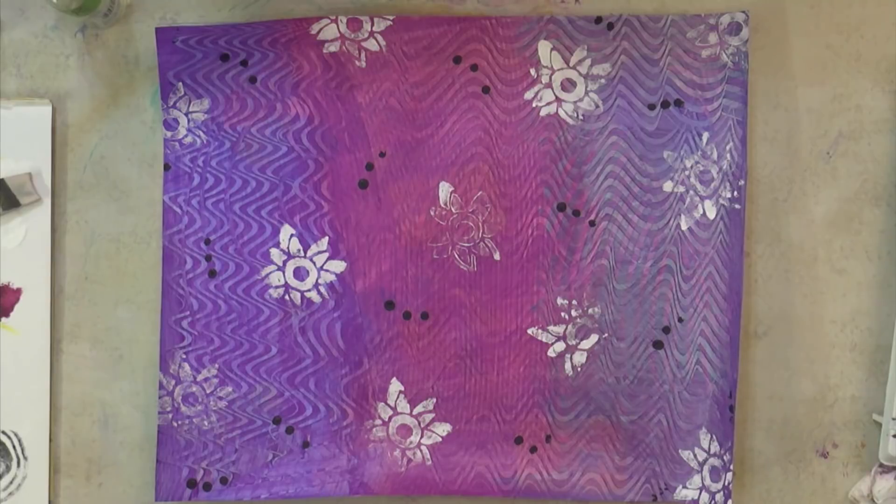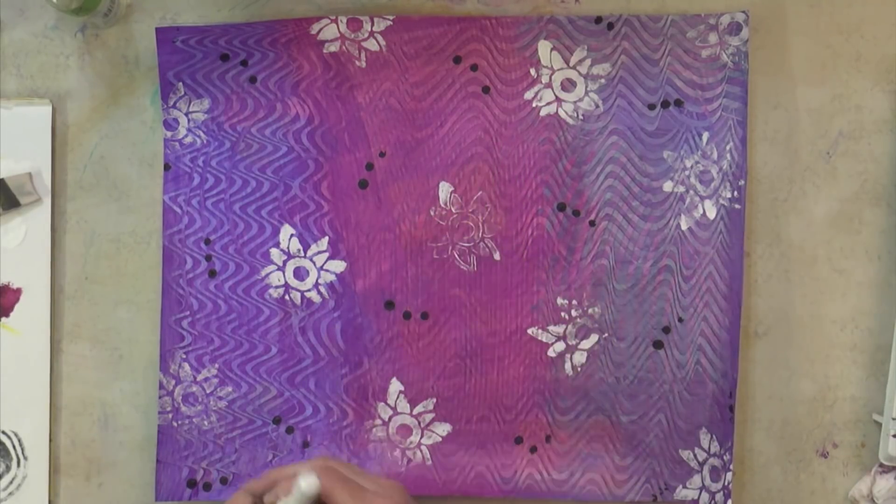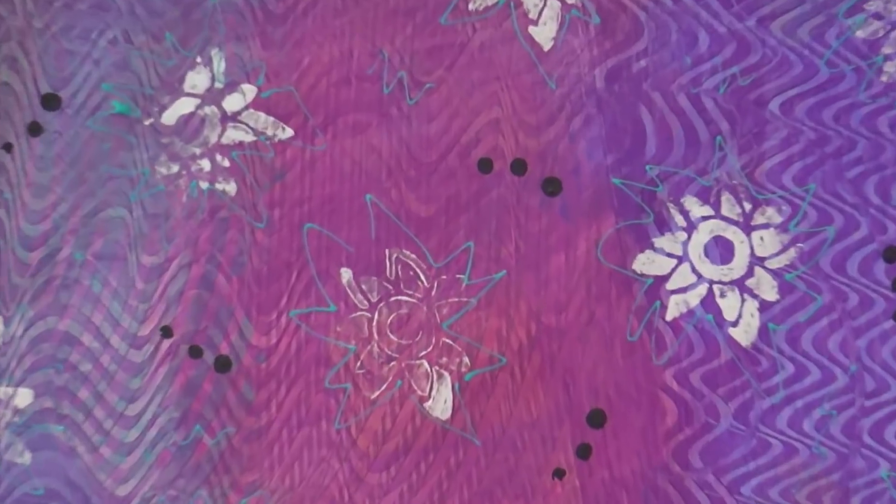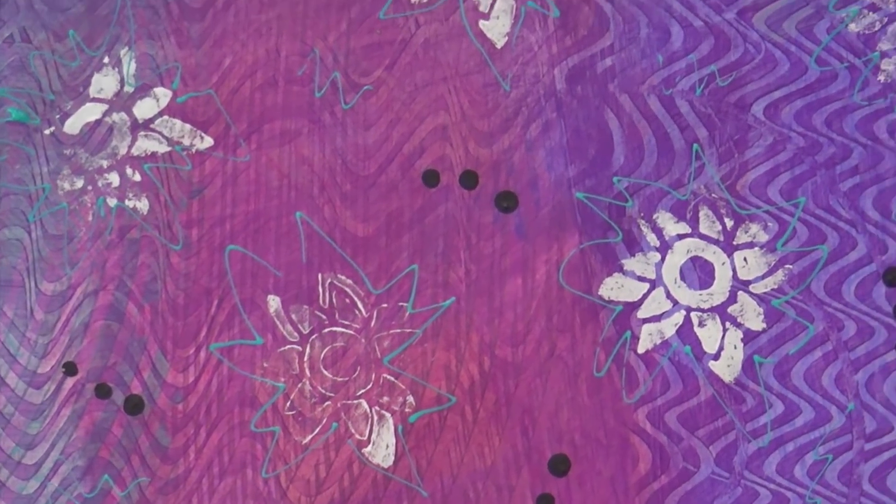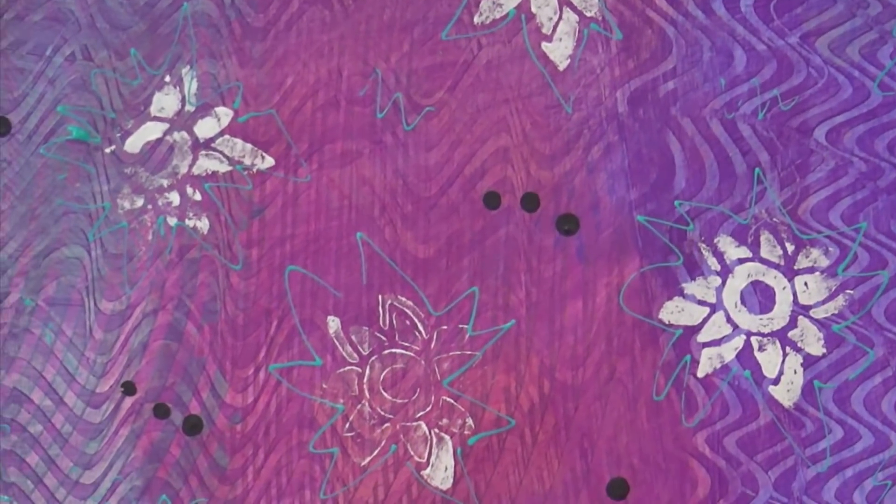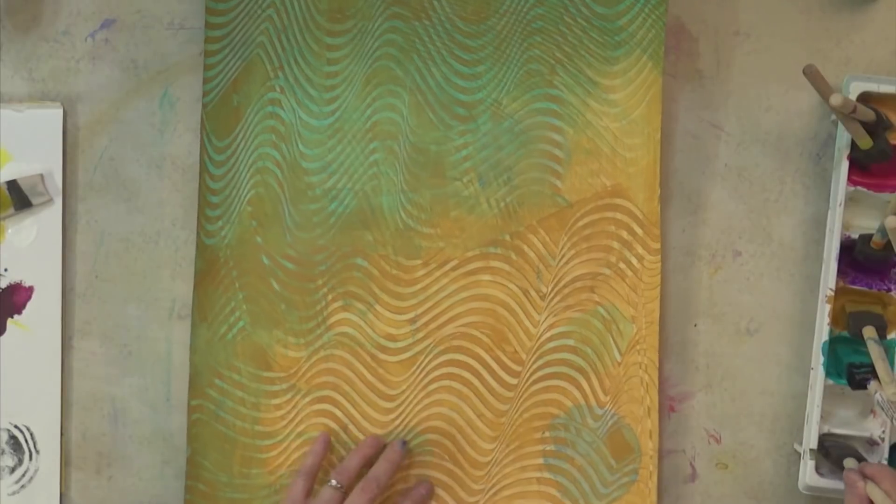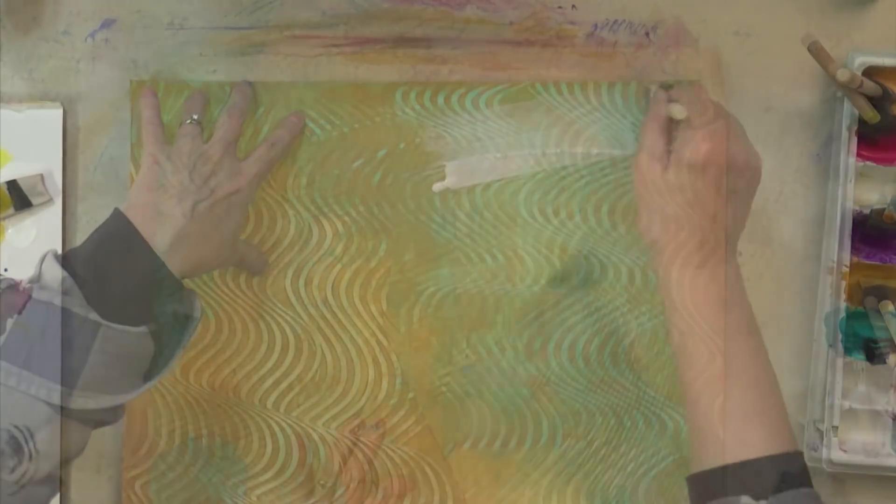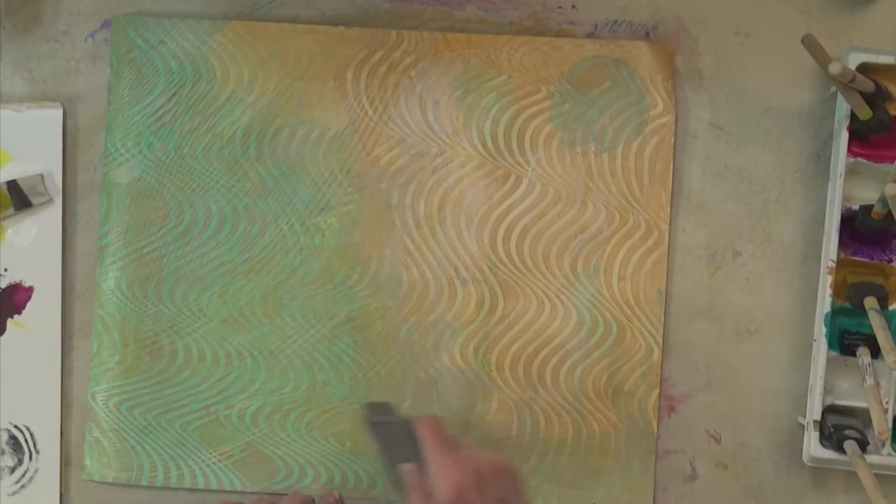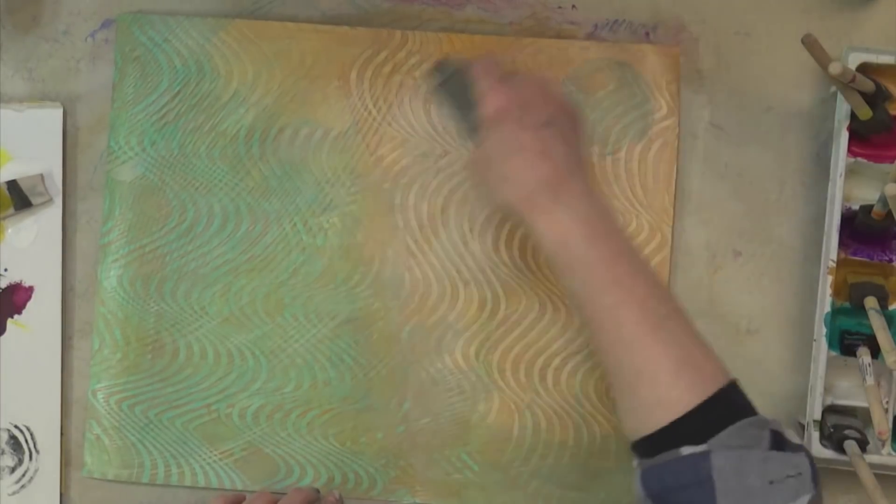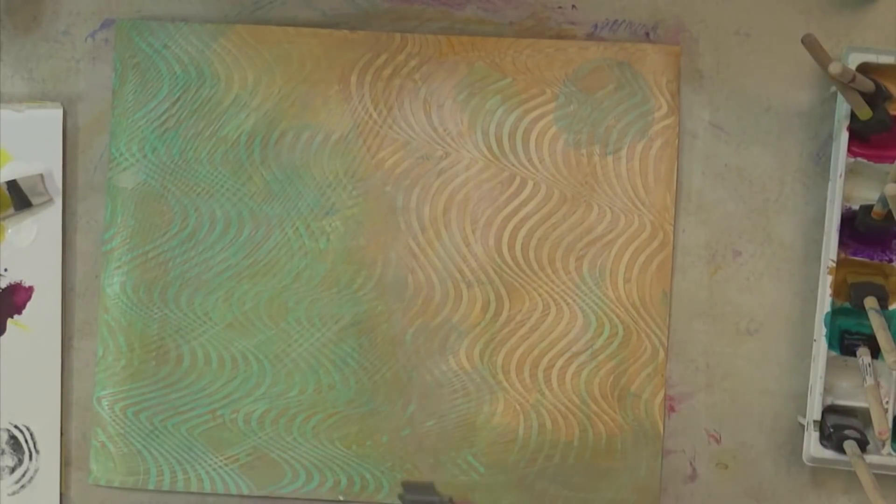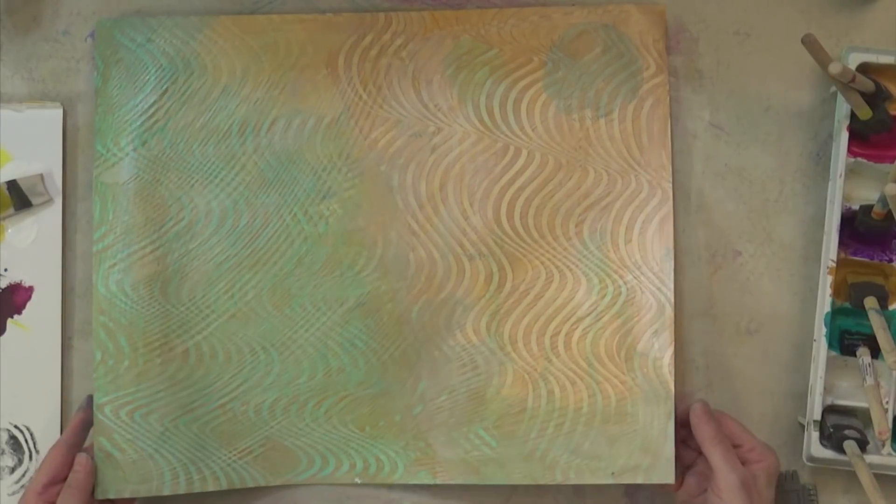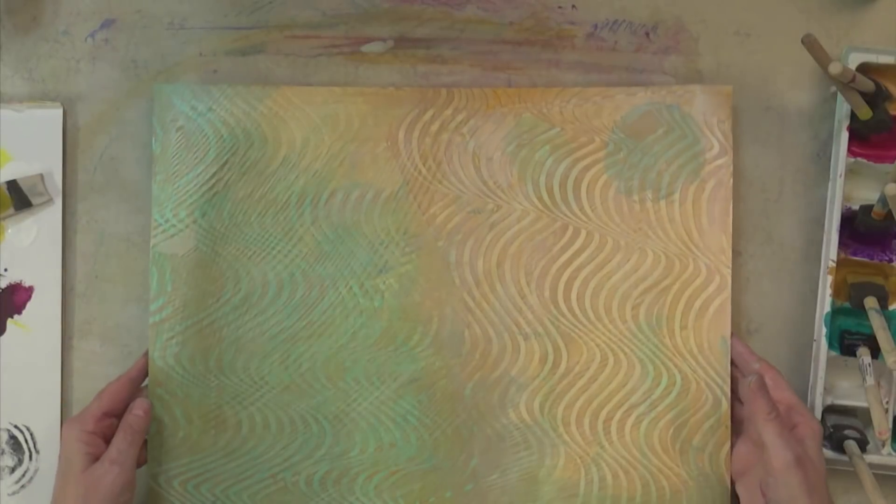What I have here is some cobalt teal—this is Golden fluid acrylic cobalt teal. I just added a little turquoise around it. I'm going to put this white pearl on this. Just not enough over here, but it's good enough for what I wanted, which was to tone it down. We're going to just let that live like that.